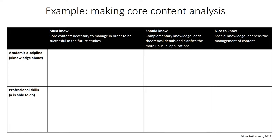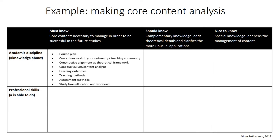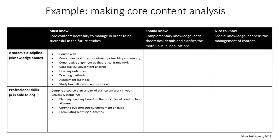With our example course, approximately 80% of the content — such as learning outcomes, teaching and assessment methods — will fall into the must know category. That is knowledge about these contents. The corresponding skills, meaning what the student is able to do, would be: the student is able to formulate learning outcomes, choose suitable teaching and assessment methods, and justify the decisions made.